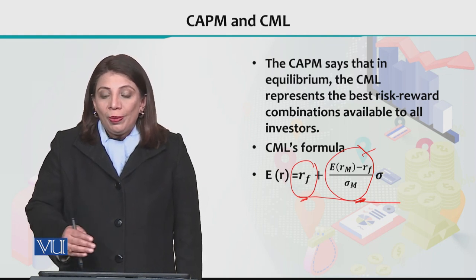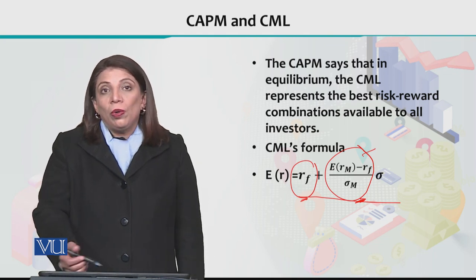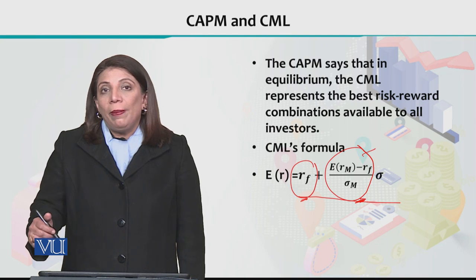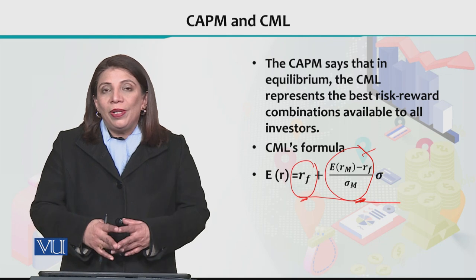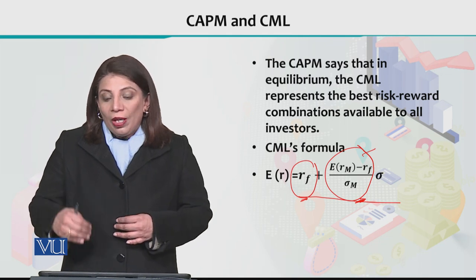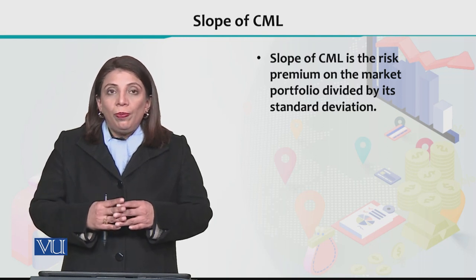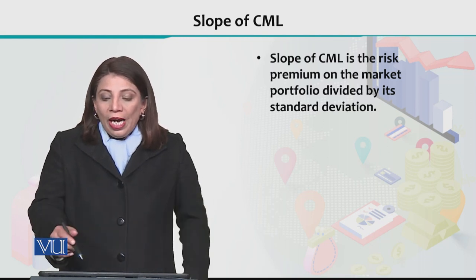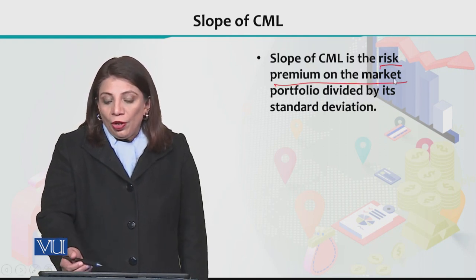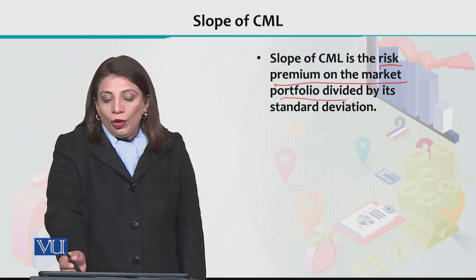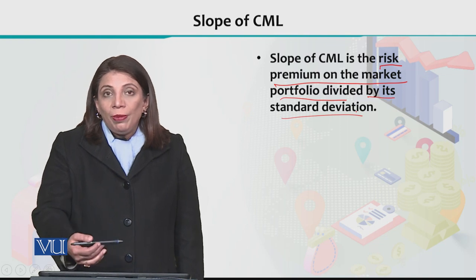Eventually, you get the optimal allocation between risk and reward, and therefore we call that specific CAL the CML — the capital market line. The slope of the CML is basically the risk premium on the market portfolio divided by its standard deviation.